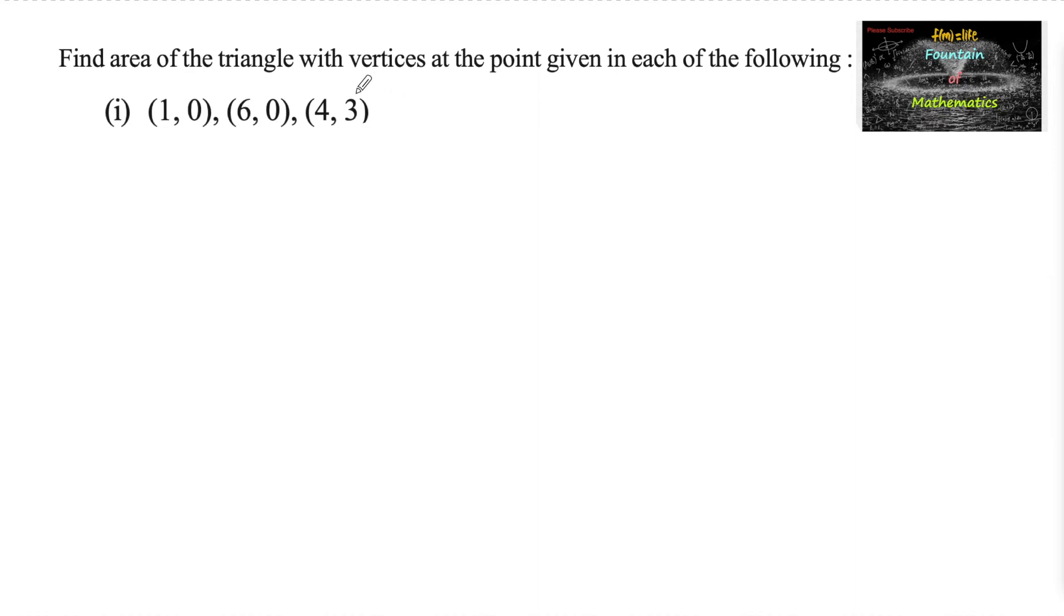Find area of the triangle with vertices at the point given in each of the following: first one (1,0), (6,0), and (4,3). We know that if a triangle has vertices A(x1,y1), B(x2,y2), and C(x3,y3),